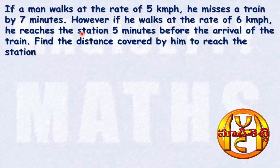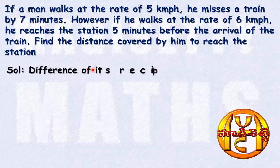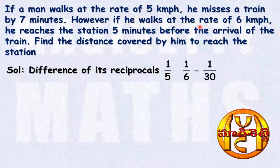Now here, we have two different speeds — the first one is 5 kmph and the second one is 6 kmph — and also two different times: 7 minutes and 5 minutes. This type of problem we can solve in just three steps. The first step is: we have two different speeds, so find the difference of their reciprocals. Here we have 5 km and 6 km; taking the difference of their reciprocals gives 1/30.